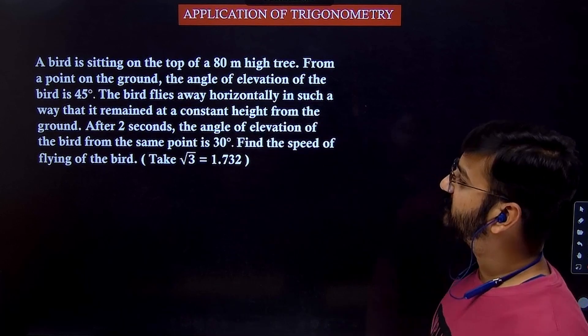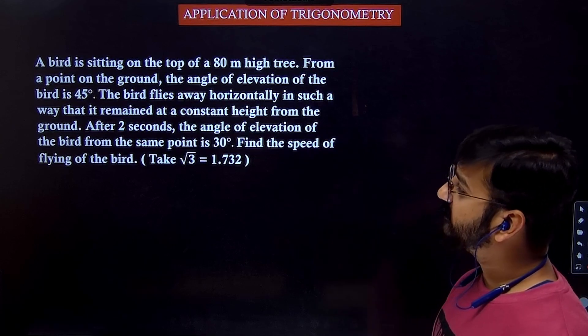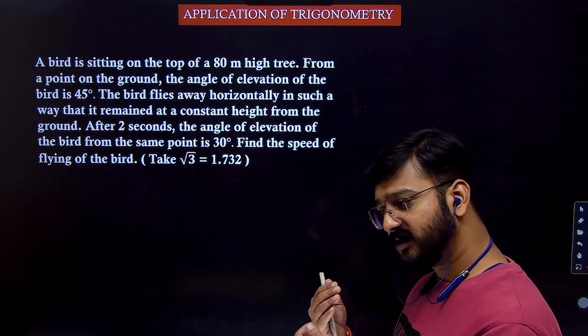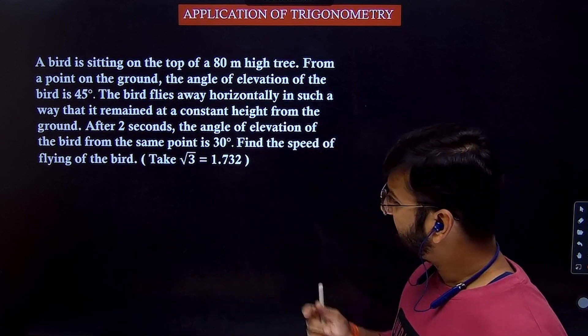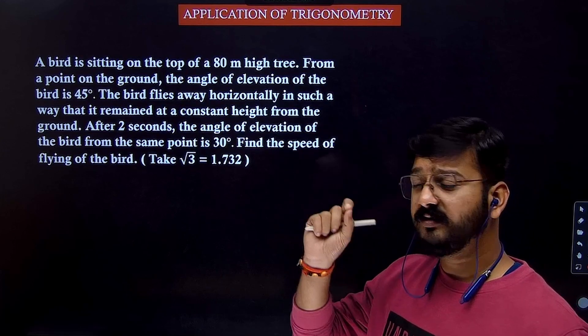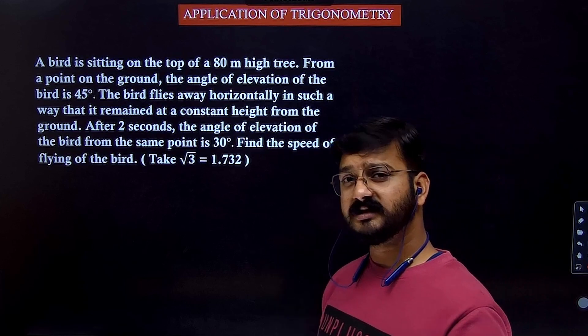So if you see the question, there is a bird sitting on a tree which is 80 meter high and you are observing the bird from a point on the ground at an angle of 45 degrees. After that the bird is moving ahead for a few time, for two seconds, and the angle of elevation is changing from 45 to 30 degrees. You need to find out what is the speed with which the bird is flying.